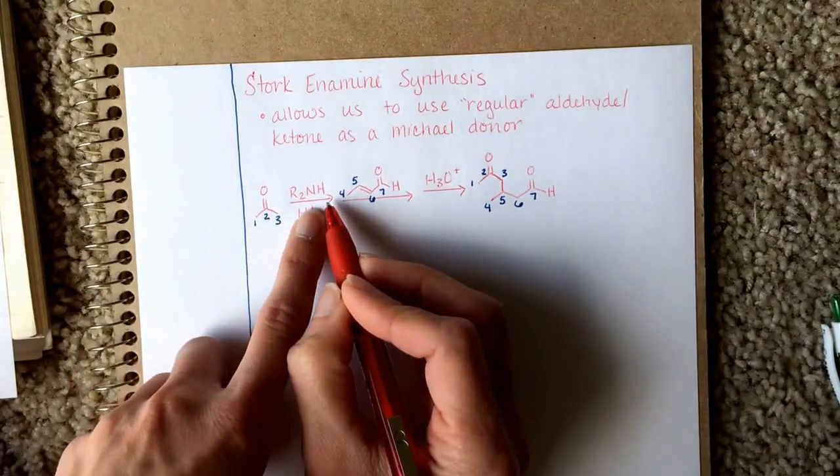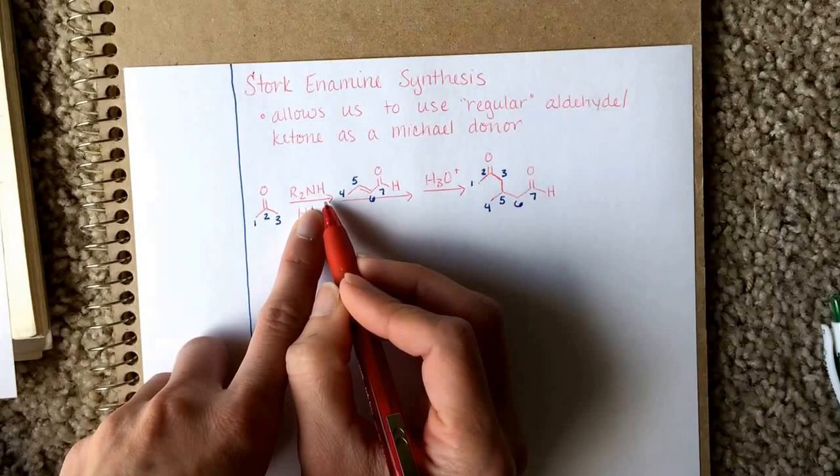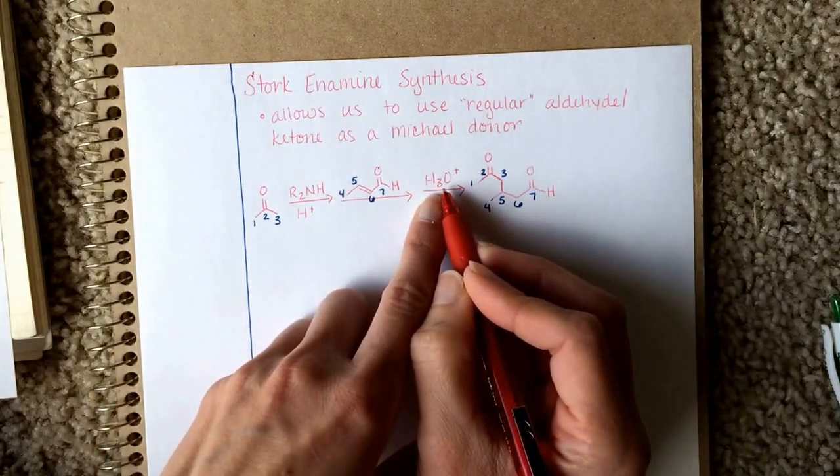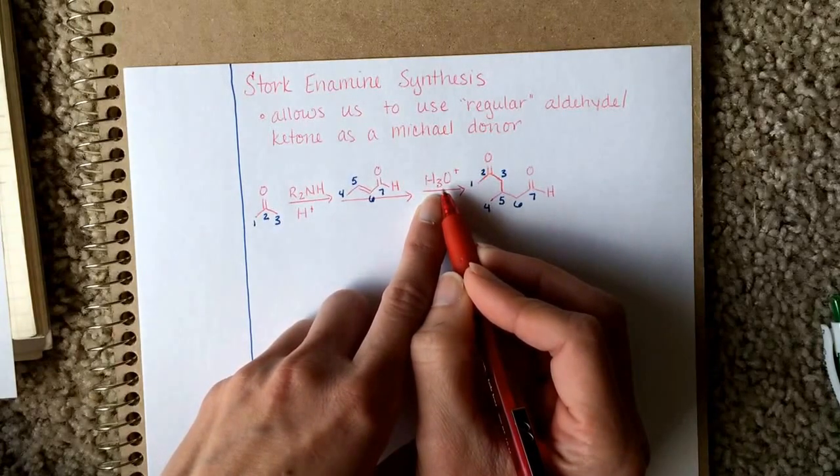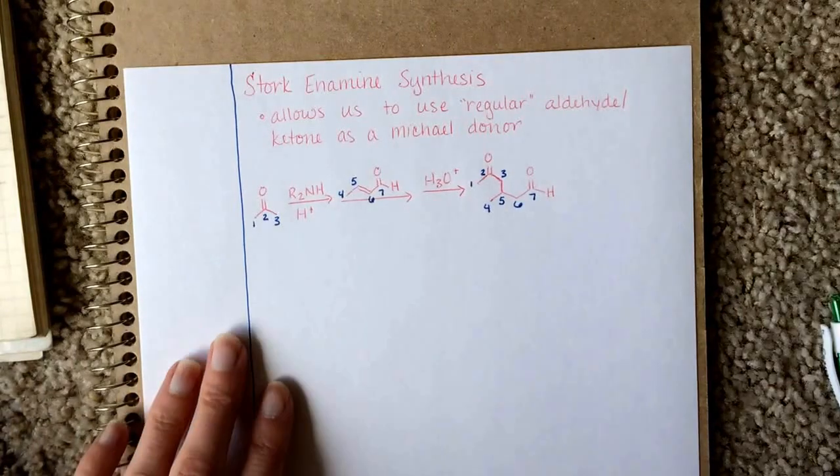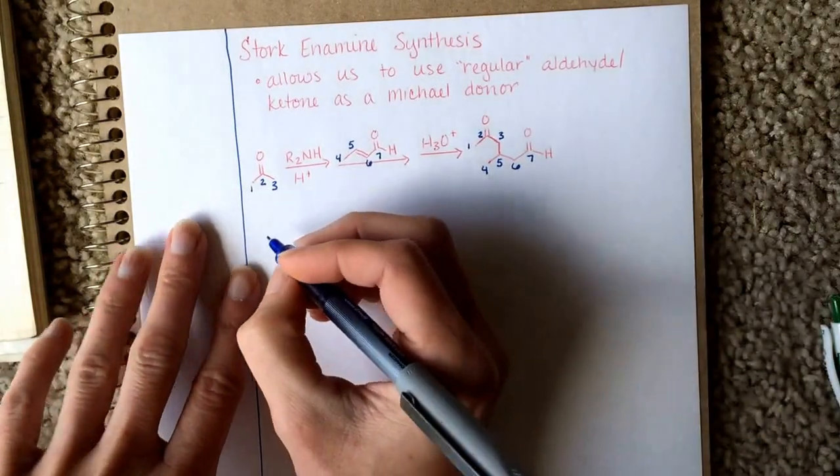Again, here, converting to an enamine. It turns itself into an enolate. Michael Addition. Finish the Michael Addition. Slash. Turn the enamine back into the aldehyde or ketone. Let's take a look at the mechanism to see how this works.